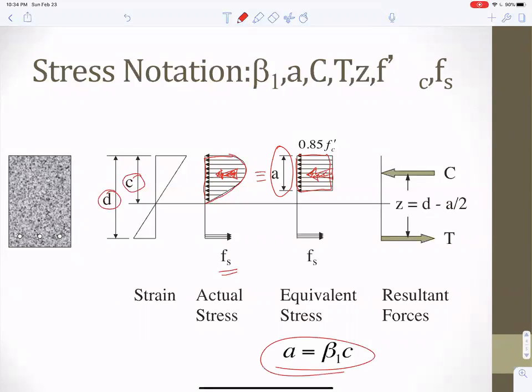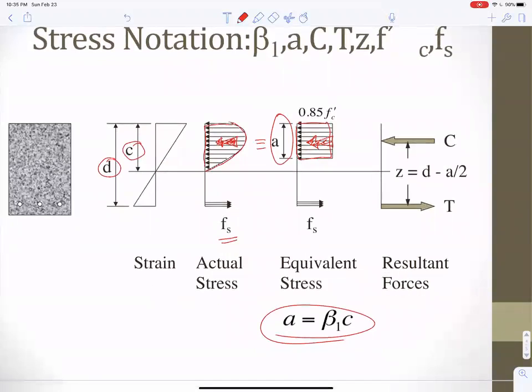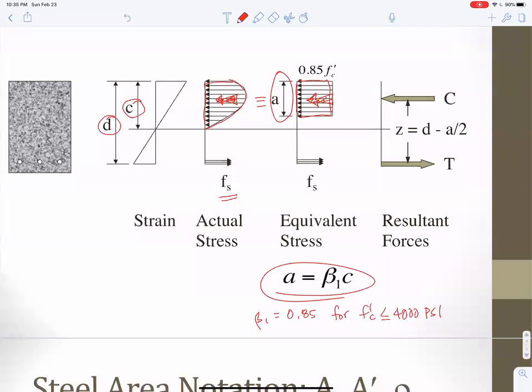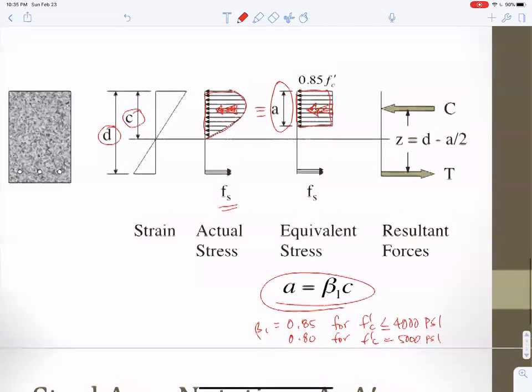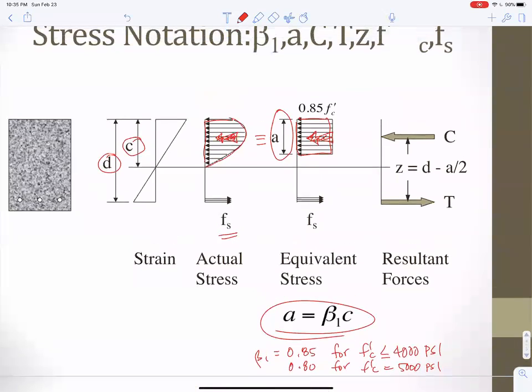That's beta 1 C. We can talk about beta 1 later, but beta 1 is typically 0.85 for F prime C less than or equal to 4,000 PSI, and you subtract 0.05 for every thousand above 4,000. For example, it's 0.80 for F prime C equals 5,000 PSI, and I believe it does not go lower than 0.70.